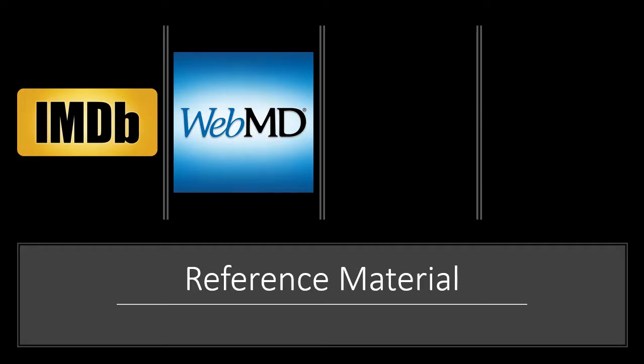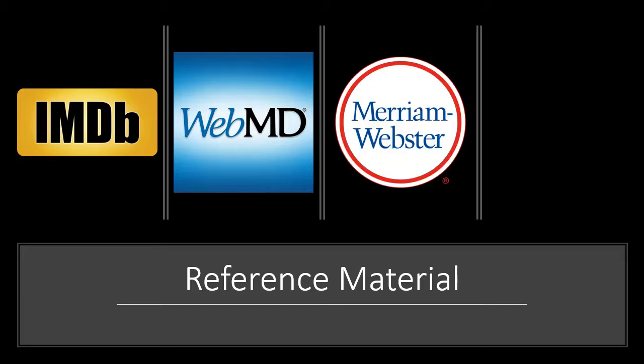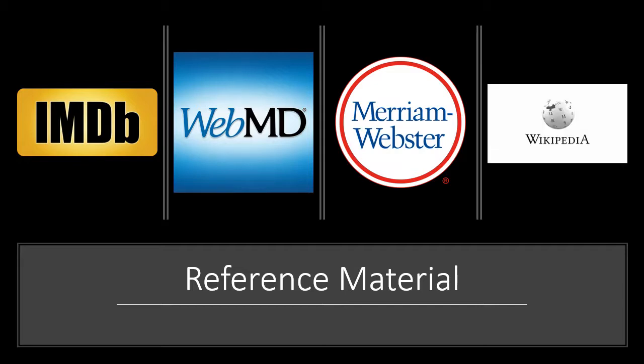Eventually WebMD will say you're going to die, but it is a source we use often. Another one is Merriam-Webster's dictionary — when you're looking up terms or maybe synonyms and antonyms to make your paper sound smarter. So we use that all the time on the web. Another one is Wikipedia. How often have you used Wikipedia to resolve a dispute with a friend, trying to prove who's right about a trivia topic? We use these all the time.